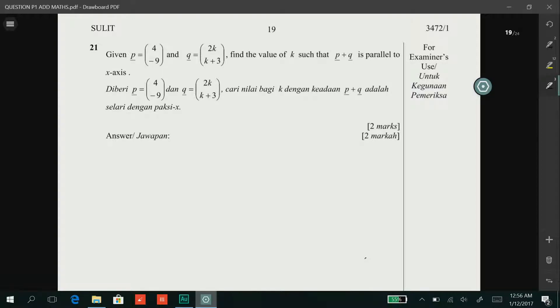Today we will discuss question 21 which is from Vector. Given P equals to (4, negative 9) and Q equals to (2K, K plus 3), find the value of K such that P plus Q is parallel to the X-axis.